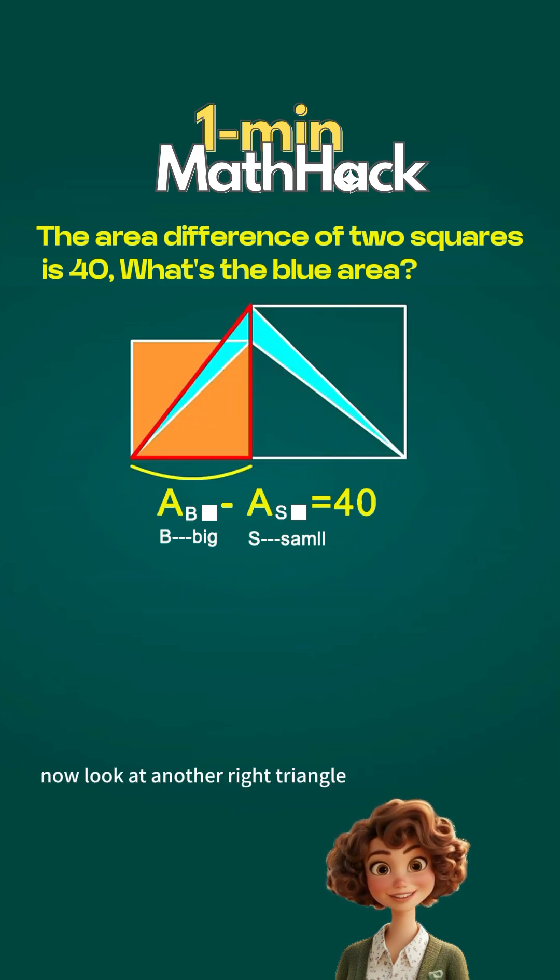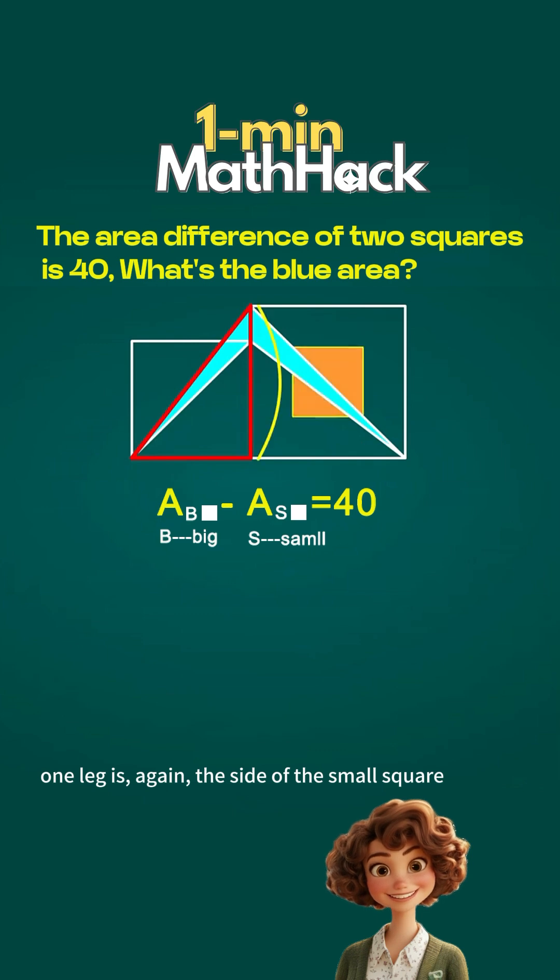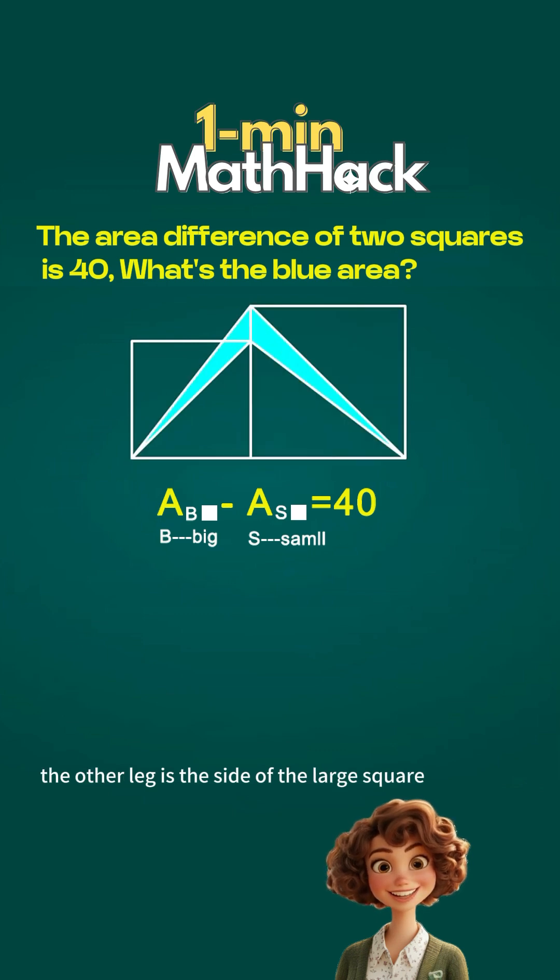Now look at another right triangle. One leg is again the side of the small square. The other leg is the side of the large square. So clearly, the two right triangles are identical.